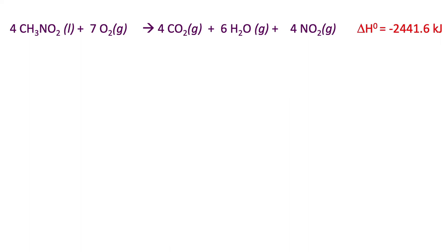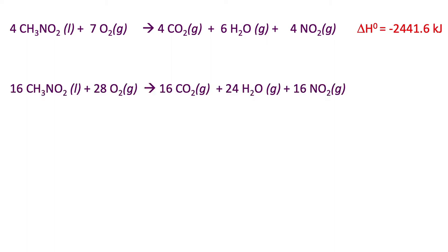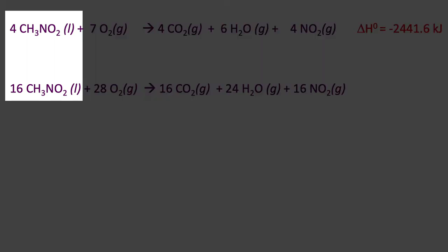If we have four moles of methyl nitrate reacting with seven moles of oxygen to give four moles of carbon dioxide, six moles of water, and four moles of nitrogen dioxide, and someone asks about reacting 16 moles of methyl nitrate, you compare: I used to have four moles, now I have 16—that's four times. Go through and double-check: seven times four is 28, four times four is 16.